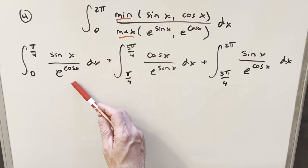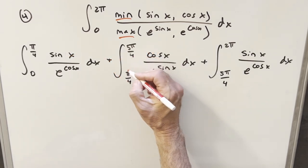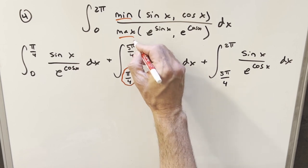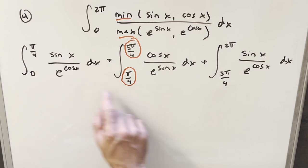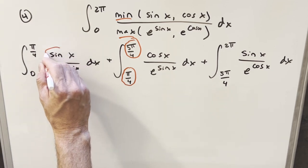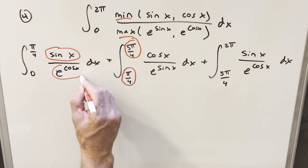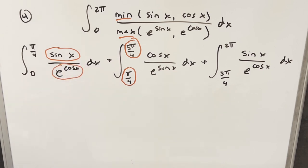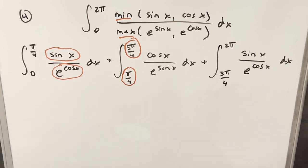Now I've split the integral into three integrals based on those intersection points at pi over four and five pi over four. To figure out which function is the min and which is the max in each region, you can look at a precise graph or test values within each range.